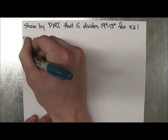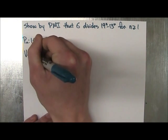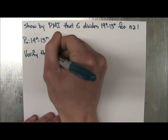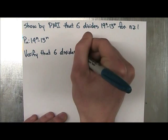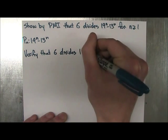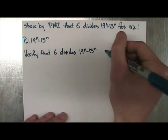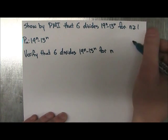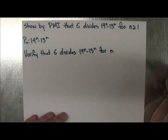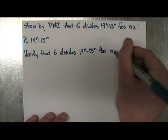So the first step is to verify, right? So we're going to verify that 6 divides 19^n minus 13^n for n and we just pick any integer we want to test. It could be 3, 4, 5, whatever you want, but obviously the easiest is 1.